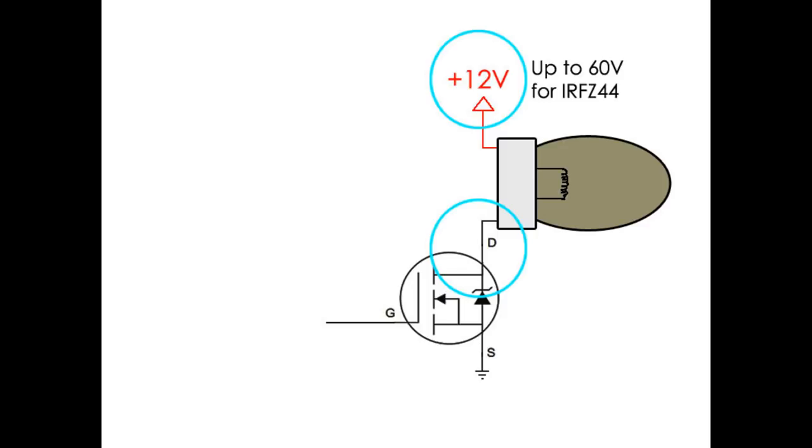However, on the drain side of things, you have a lot more freedom in the voltages you can use. The only limitation is what the transistor can handle. This IRF-Z44 is rated for up to 60 volts, so I can switch 12 volt loads, 50 volt loads, whatever I want, all the way up to 60 volts DC.